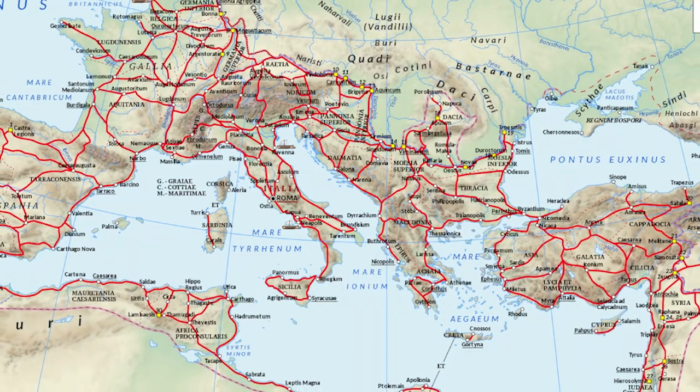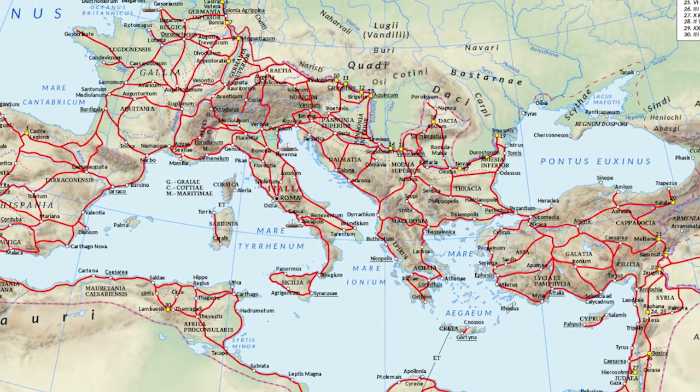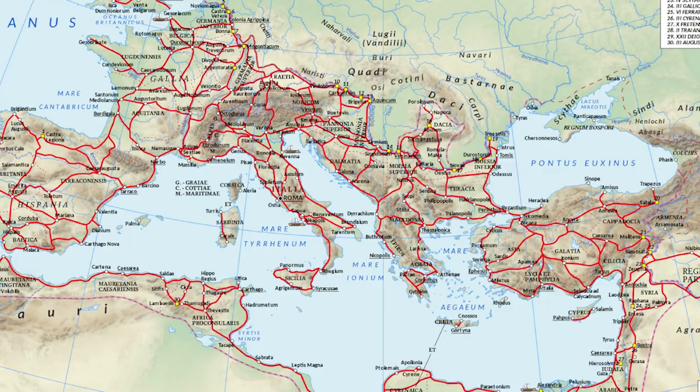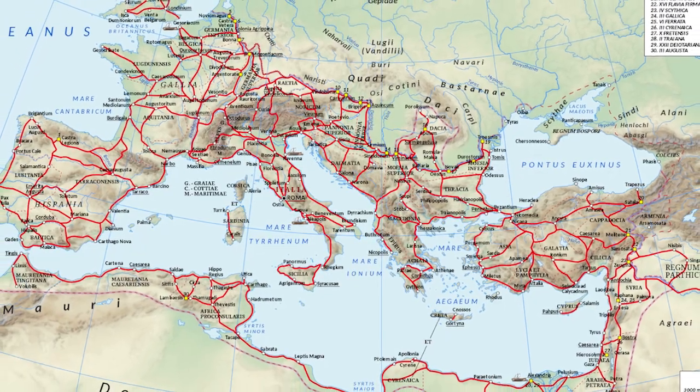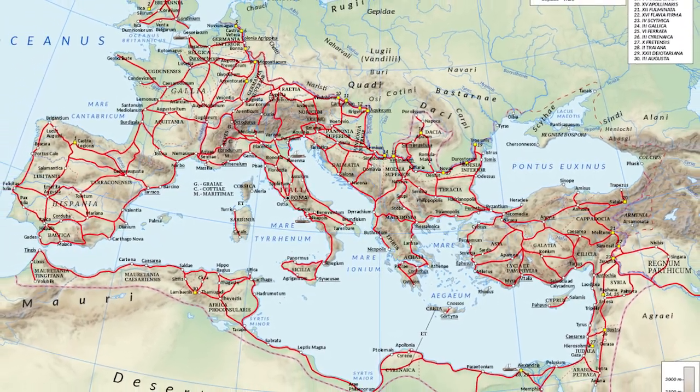At the height of the Roman Empire, there was over 250,000 miles of road, 50,000 of which was stone paved road, so all roads really did lead to Rome after all.